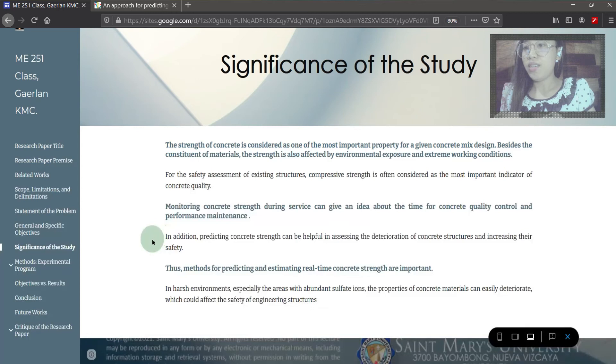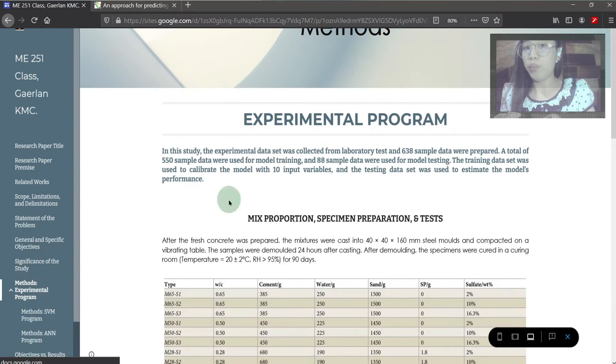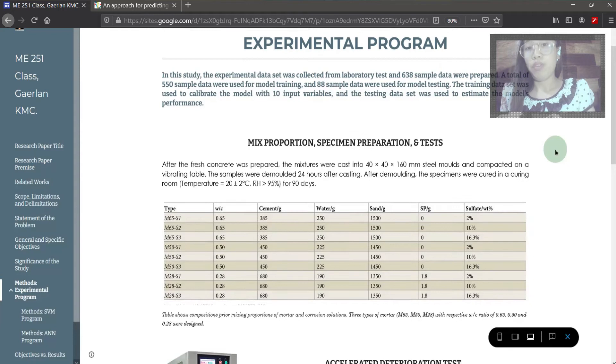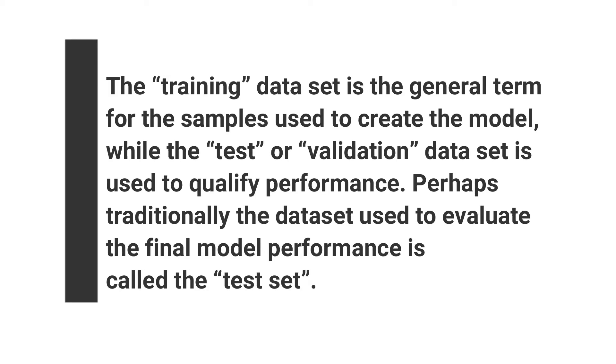Conducting the research starts with establishing our baseline for preparing the experimental program. 638 sample data were gathered, 550 were used for model training, and 88 for model testing. The training dataset is the general term for the samples used to create the model, while the test or validation dataset is used to quality performance. Perhaps traditionally, the dataset used to evaluate the final model performance is called the test set.